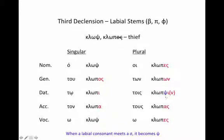Next, labial stems: beta, pi, and phi. Again, all of the endings are the same, but when we get to that dative plural, the sigma butts up against your labial consonant and becomes psi.